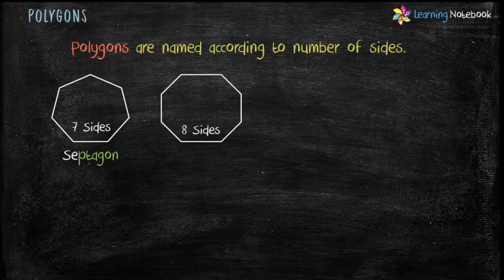Then, a polygon with eight sides is called octagon. You can remember octagon from octopus. As we all know that an octopus has eight arms.